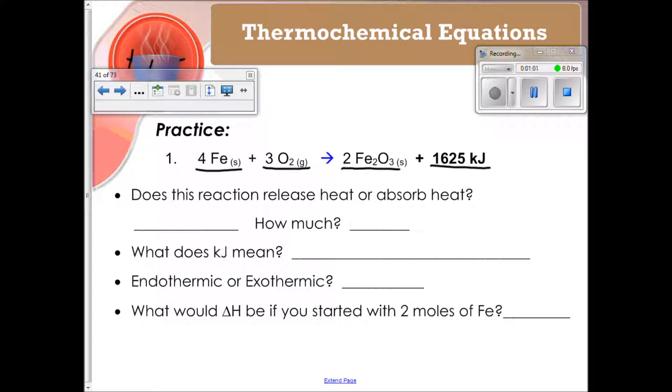So it says, does this reaction release heat or absorb heat? If the 1625 kilojoules is on the right-hand side of the equation, it is a product, which means it is being released as a product of the reaction. Therefore, it is releasing that heat.